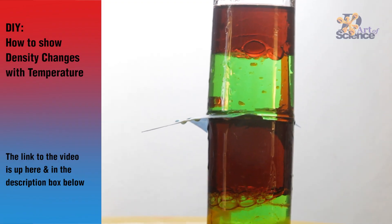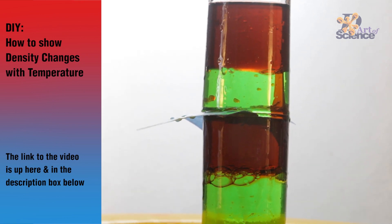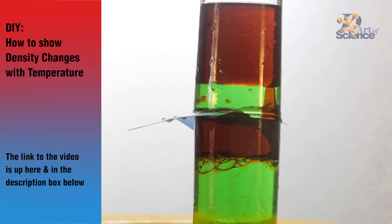You can use this property to make this density tower of hot and cold water. Because of its lower density, the hot water tries to float on top of the cold water.